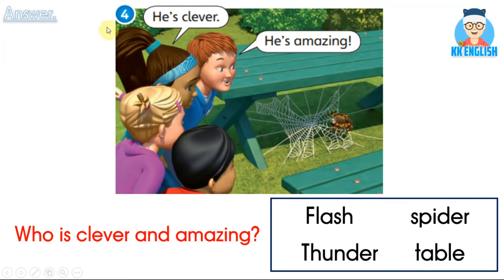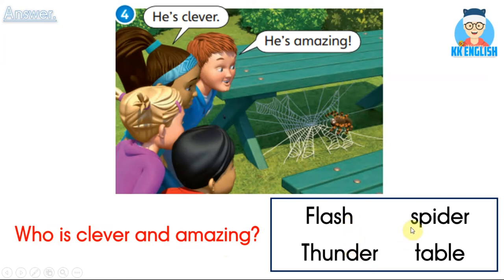Picture number four: Flash says 'He's clever!' 她好聪明啊。And Thunder says 'He's amazing!' 她好神奇啊。Who is clever and amazing? 在这里，又聪明又让人觉得很神奇啊 — Flash, Thunder, Spider, or table? Yes, spider! 在这个图片里面，Spider is clever and amazing.